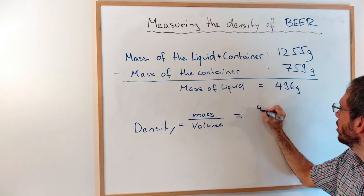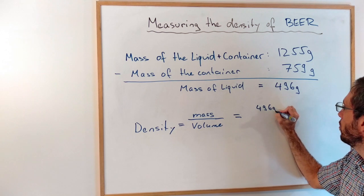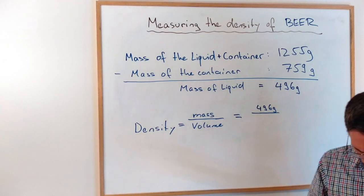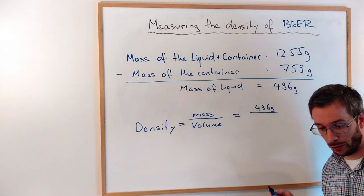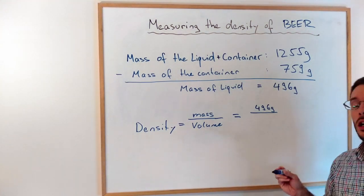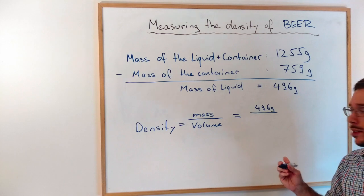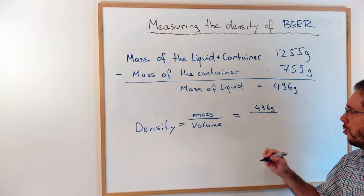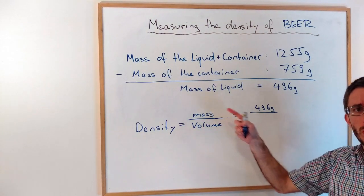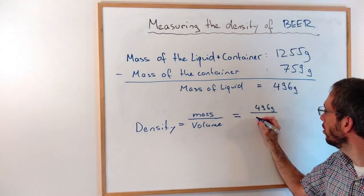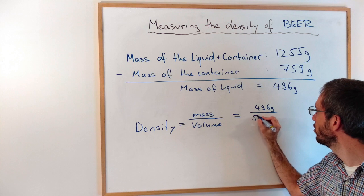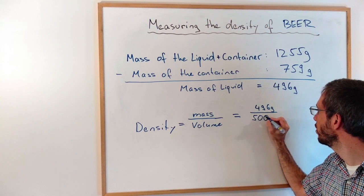Mass of the beer: 496 grams over my volume. The glass indicates it can hold up to 0.5 liters with one significant figure. Usually densities are given in grams per milliliter, so I'm going to convert that. 1000 milliliters is a liter, so half a liter is 500 milliliters.